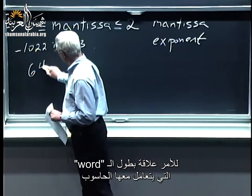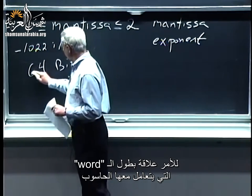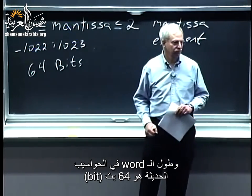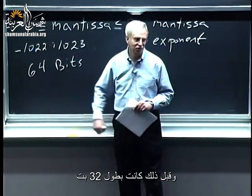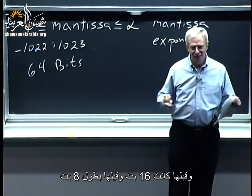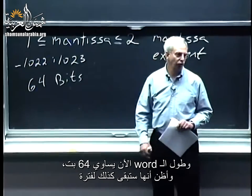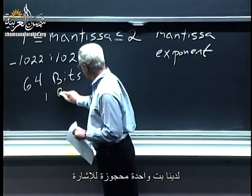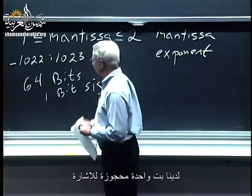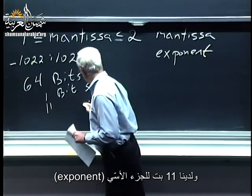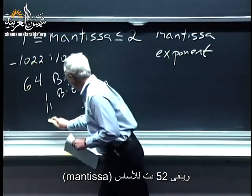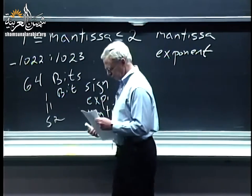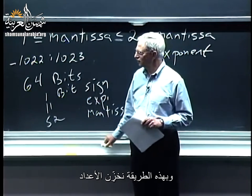These magic numbers come from the fact that computers have words. In a modern computer, words are 64 bits — for many years they were 32 bits, before that 16 bits, then 8 bits. We get 1 bit for the sign, 11 for the exponent, and that leaves 52 for the mantissa. That basically tells us how we're storing numbers.